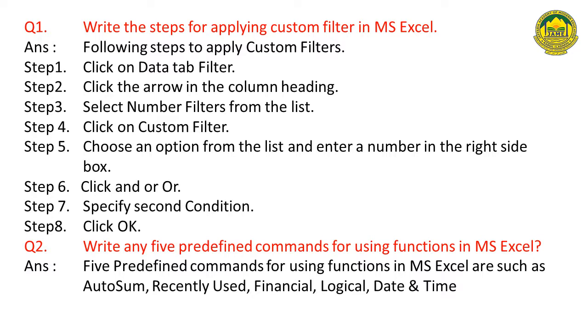Step four: click on the custom filter. Step five: choose an option from the list and enter a number in the right side box. Step six: click AND or OR. Step seven: specify second condition. Step eight: click OK. This way you can apply custom filter in Excel.